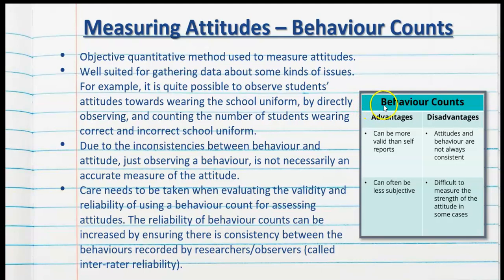Behavior counts have their own advantages and disadvantages. Advantages include that they're more valid than self-reports, since people can give social desirability bias in self-reports, whereas behavior counts can be objective and verified. As a result, they can often be less subjective, which again increases the validity.